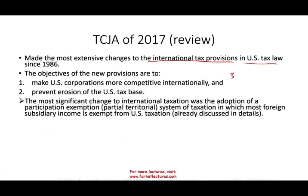The U.S. government did reduce the corporate tax rate, which was up to 35%, down to 21%. But what they also tried to do was prevent the erosion of the U.S. tax base. This is what GILTI did, and this is what BEAT did. In GILTI we talked about this; in BEAT, it's going to take another shot at preventing the erosion of the U.S. tax base.